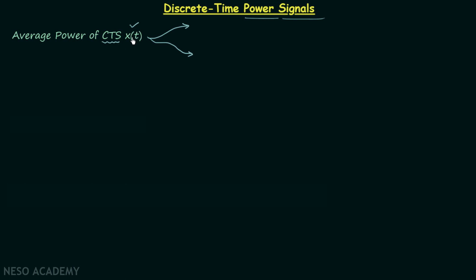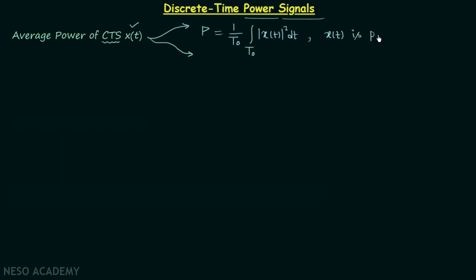If signal x(t) is a periodic signal, the formula for average power P is equal to 1 over T0, where T0 is the fundamental time period, times the integration over T0 of |x(t)|² dt. We will choose this formula when the continuous time signal x(t) is periodic in nature.